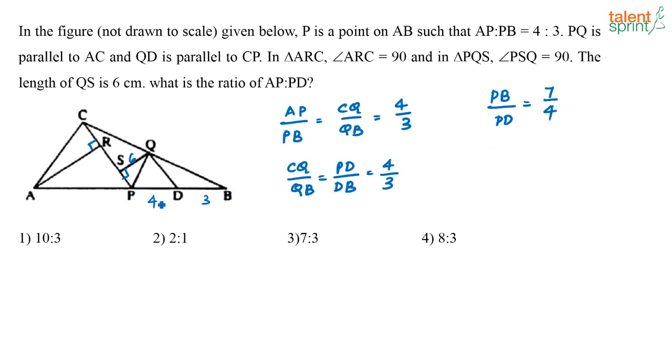See, this PB, like even if you take this as 4X, it didn't be exactly 4 and 3, even if this is 4X and 3X. So PB is going to be 7X and PD is going to be 4X. So 7X by 4X is nothing but 7 by 4, or directly I say if this is 4 and this is 3, PB is going to be 7, PD is going to be 4. So what is PB by PD? It is nothing but 7 by 4.